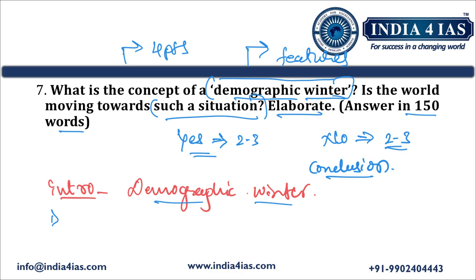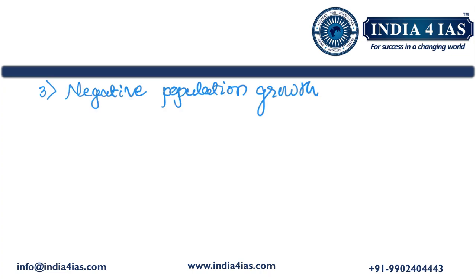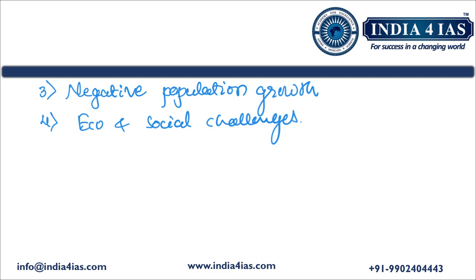After defining demographic winter, we write its key features. First is declining fertility rates — fewer children born per woman. Second is aging population — a growing proportion aged 65 and above. Third is negative population growth — more deaths than births over time, leading to a shrinking population. Fourth is economic and social challenges: shrinking labor force, increased strain on social security systems, and reduced economic productivity, because the government must support a larger elderly population with fewer working-age people.